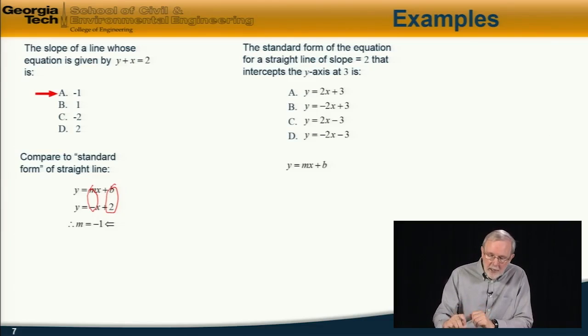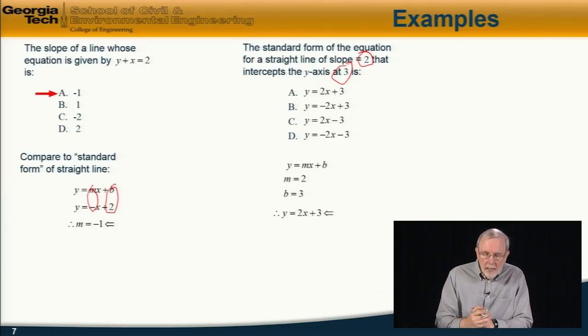Because we're given the slope and the intersect. So, we see that the slope is 2, in other words m = 2, and the intercept is 3, so b = 3. So, therefore, the standard form is y = 2x + 3, and the answer is a.